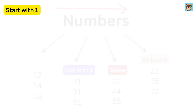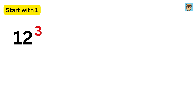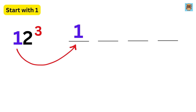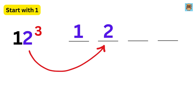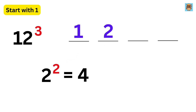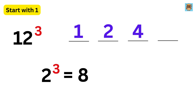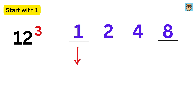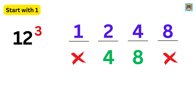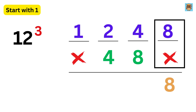Let us start with the first category and consider 12 cube. This is super easy — make four spaces. First write 1 here, then write 2 here, then take 2 squared which is 4 and write it in the third space, then take 2 cubed which is 8 and write it in the fourth space. Now just below the first and last number put a cross mark, and for the two middle numbers just double them: 2 becomes 4 and 4 becomes 8.